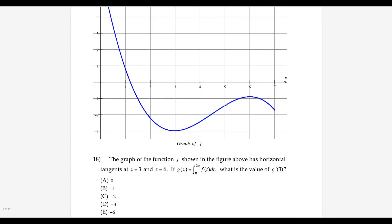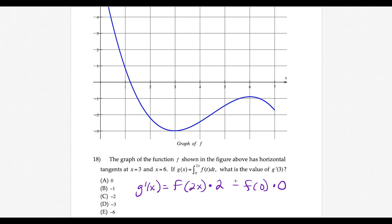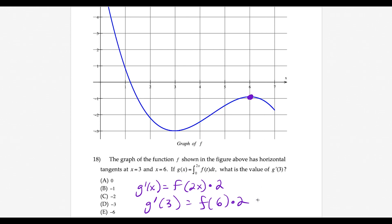Question 18: g(x) is the integral from 0 to 2x of f(t) dt and we want g-prime of 3. Using FTC part 2, g-prime of x equals f(2x) times 2 (the derivative of 2x). Plugging in 3: 2 times 3 is 6, so we need f(6) times 2. Reading f(6) from the graph as negative 1: negative 1 times 2 equals negative 2 — choice C.